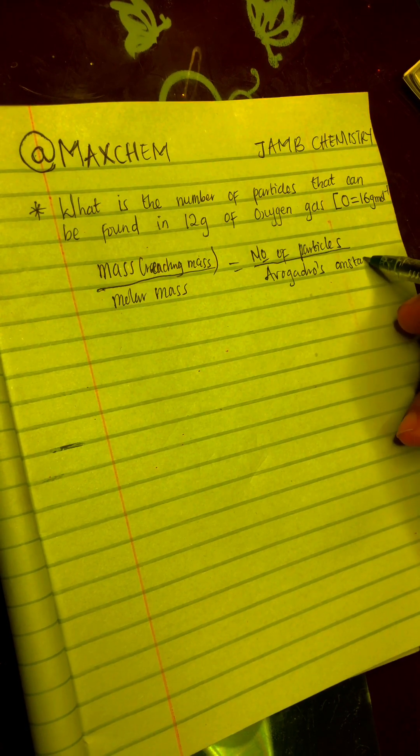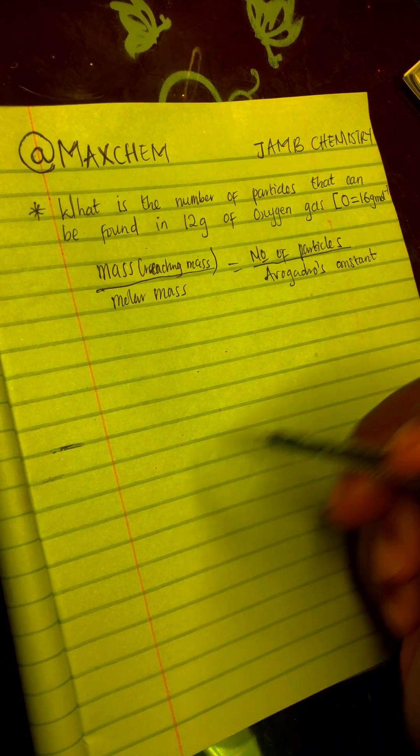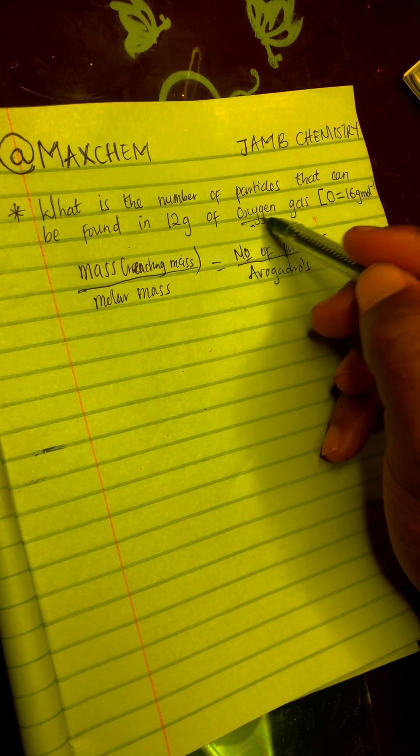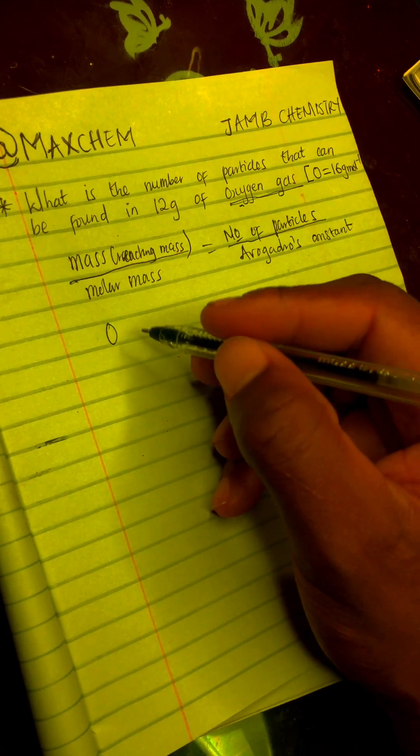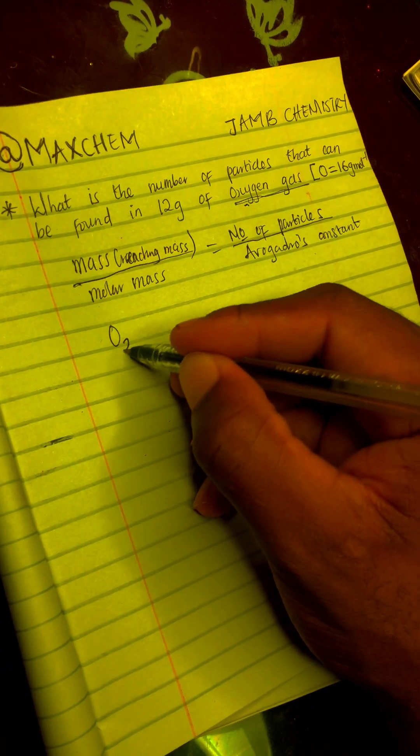I believe you all know the Avogadro's constant. Now in the question, if you check very well, we are asked and they said oxygen gas. We all know that oxygen gas is the diatomic type of oxygen atom. So this is oxygen gas.